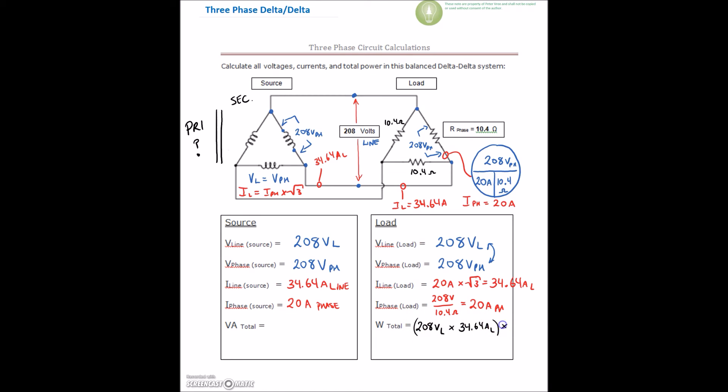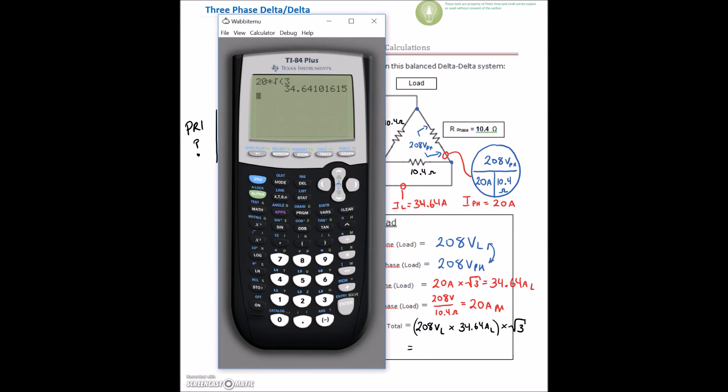So for this guy, I can do 208 volts on the line. My line current is 34.64 amps on the line, and I'm going to multiply those guys by root 3. We've got 208 times 34.64 times the square root of 3. That gives me 12,479.63.